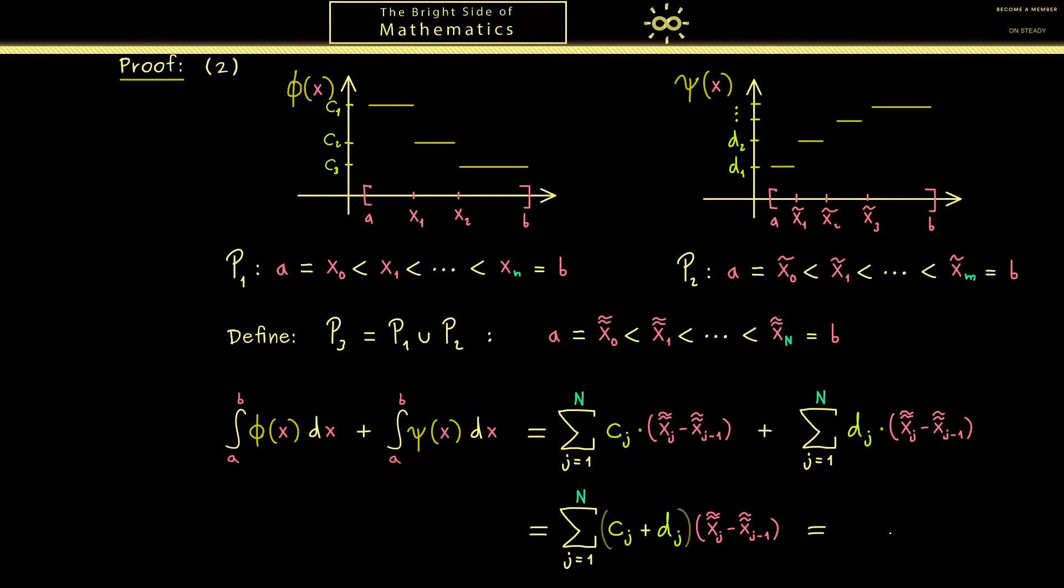So this means the sum here represents the area that is given by the sum of the two functions. In other words here we get out the integral of phi plus psi. And there you see this is exactly what we wanted to show.